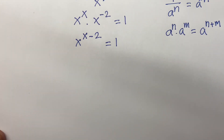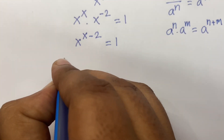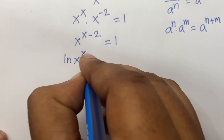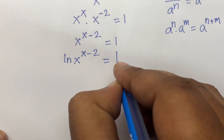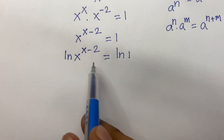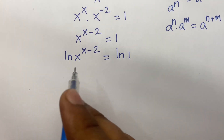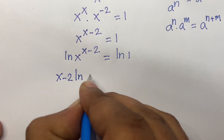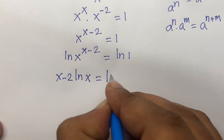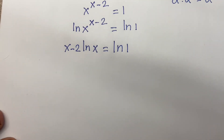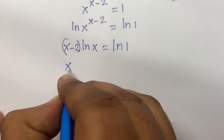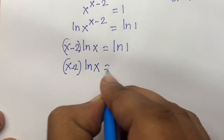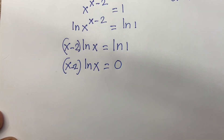I use ln on both sides. I can say ln of x to the power x minus 2 equal to ln 1. I move the exponent in front, so here is x minus 2 times ln x equal to ln 1. Since ln 1 equals 0, I can say x minus 2 times ln x equal to 0.